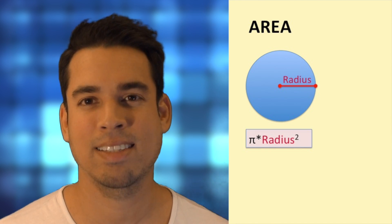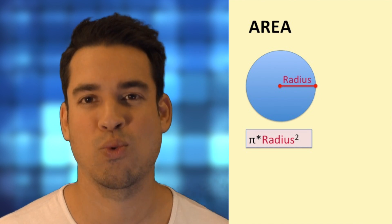Next, to calculate the area of the circle, you simply multiply pi times the radius squared.